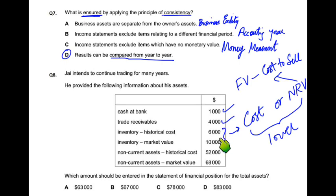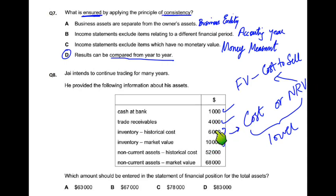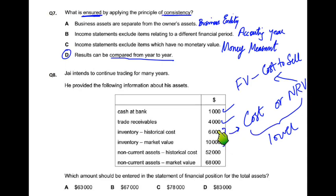NRV यानी net realizable value का मतलब है fair value जितने की बिक सकती है, minus cost to sell। Example: inventory 6,000 की खरीदी, बेचने पर 11,000 मिलेंगे लेकिन delivery cost के बाद हाथ में 10,000 आएंगे। Lower value 6,000 है तो इसे 6,000 पर रखेंगे। अगर NRV 5,000 होती तो cost ज़्यादा होती, तो lower value 5,000 लेते — ज़्यादा पर नहीं, कम पर रखना है।